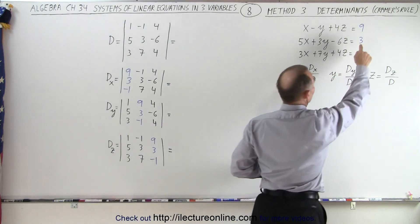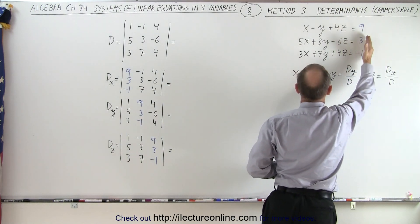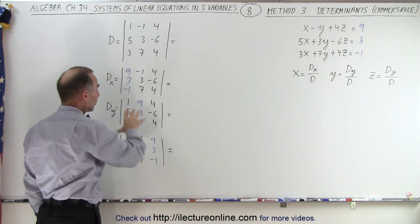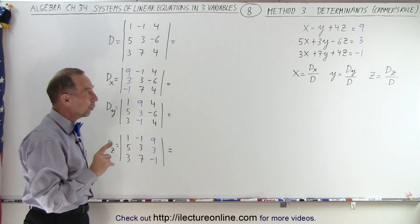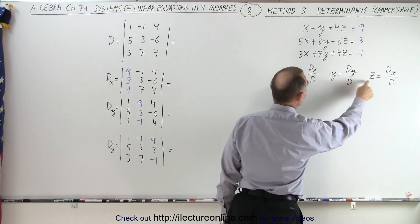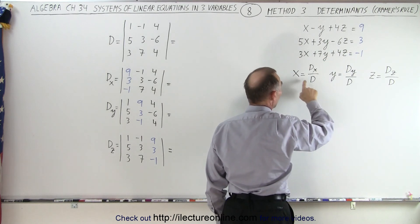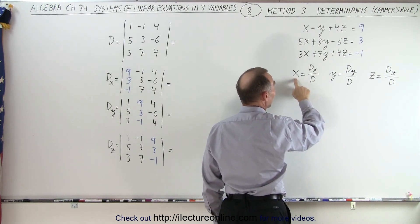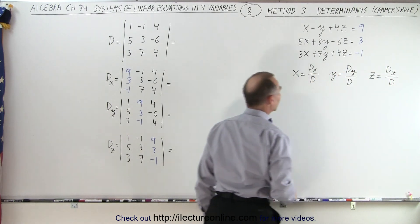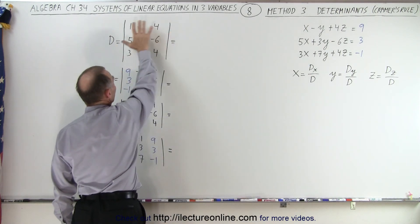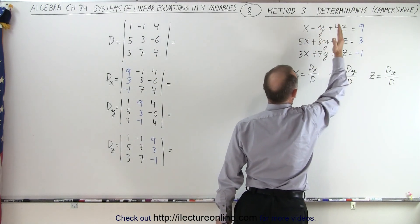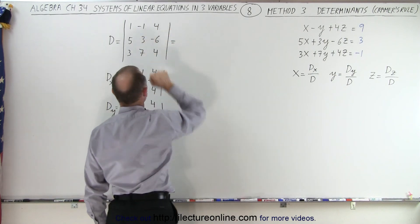Notice I colored the constants to the right of the equal sign in blue because there's a relationship between this and the determinants that we set up. Notice there are four determinants that we need to evaluate, and when we finish evaluating these determinants, we can then find the values for x, y, and z — the three variables in our system of linear equations. We can figure out what these are equal to by dividing D_x by D, D_y by D, and D_z divided by D. The D determinant is simply the determinant formed by taking the coefficients of the x, y, and z variables in our three equations and placing them in there.